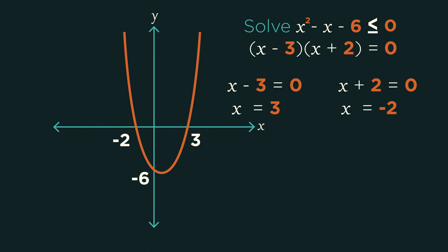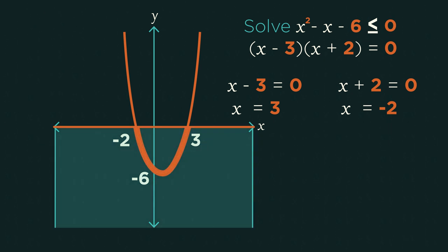Because we want where the quadratic is less than 0, we want this part of the graph. The part that is less than 0 for y, but also has the quadratic in. This means the answer is x is greater than or equal to negative 2, but less than or equal to 3.